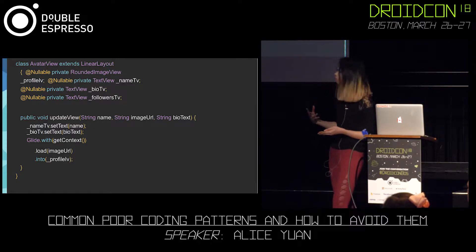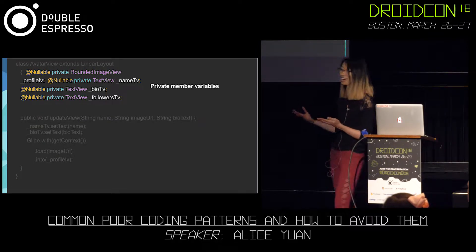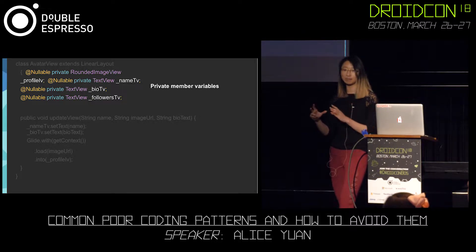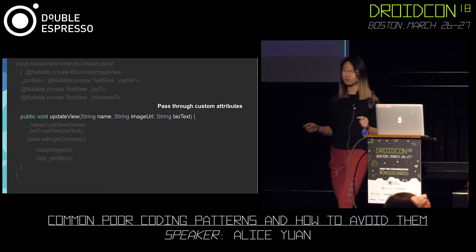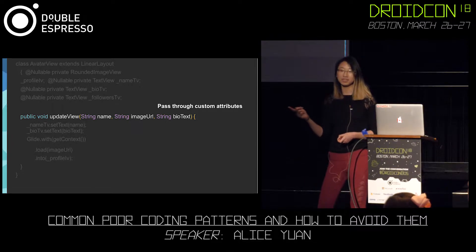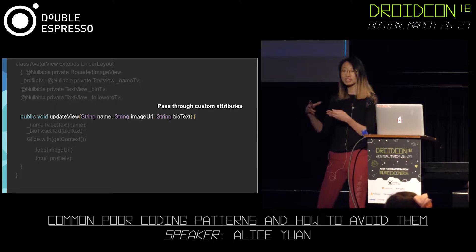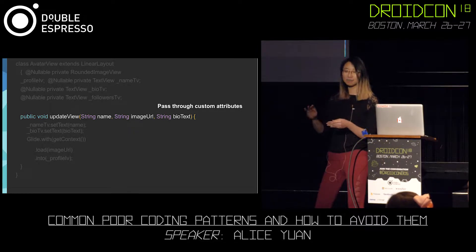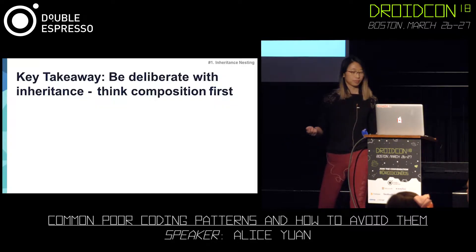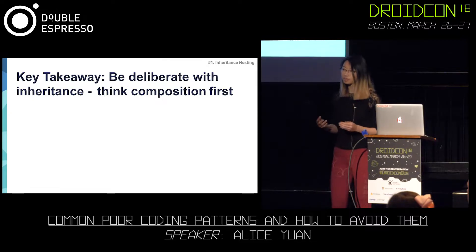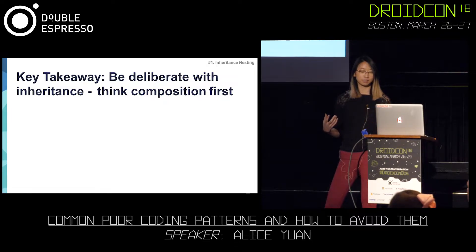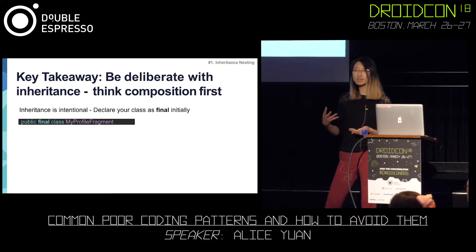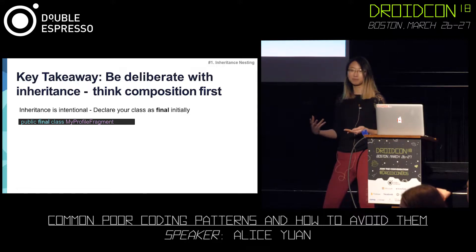So what the code would look like is actually very similar to what it previously looked like, but we made some great updates. Number one is that we no longer have those protected member variables — we have private member variables, and the scope is only kept within the avatar view. Number two is that we're passing through custom attributes. These custom attributes mean that we don't have to update the avatar view every single time we want to change the contents of the avatar. So if we want to update that following text to show something different on my profile fragment and pinner fragment, that's just a simple line change. We no longer have to take that logic out of the avatar view. So our key takeaway for this problem is that we should be deliberate about inheritance. We should think about composition first. Inheritance should always be intentional.